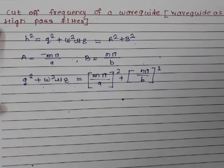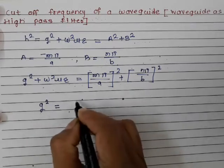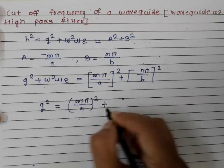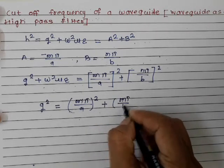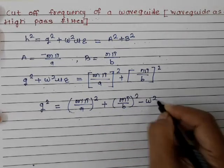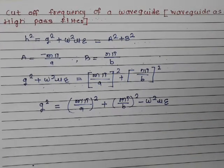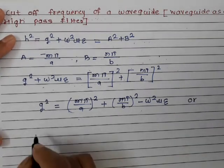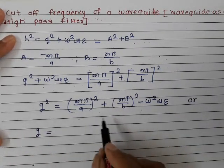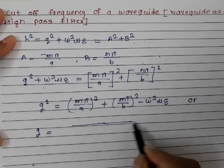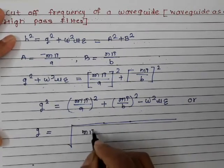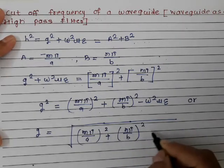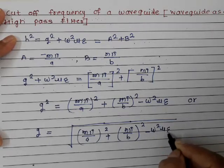Now if I'm interested in gamma, I can write γ² = (mπ/a)² + (nπ/b)² − ω²με. Taking the square root of the whole term, gamma becomes the square root of (mπ/a)² + (nπ/b)² − ω²με. These things we have already seen; I have just substituted the values.